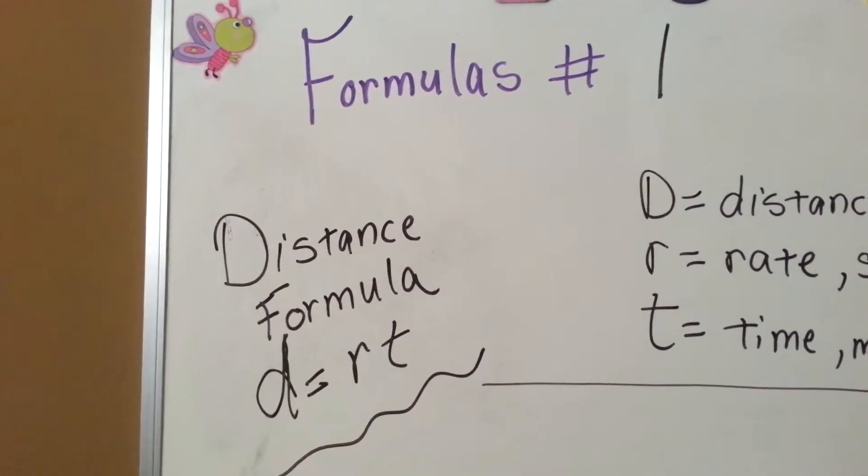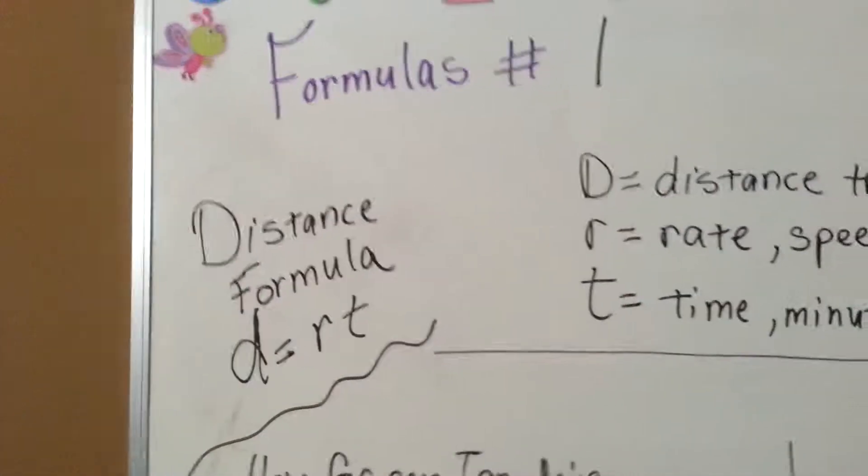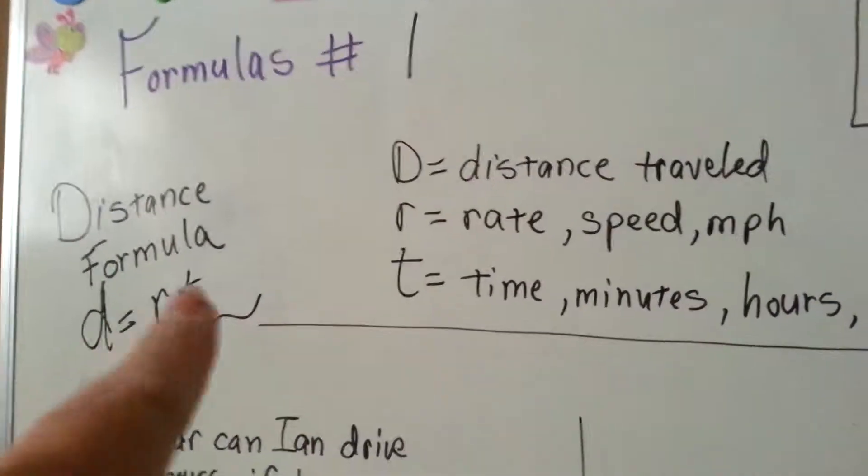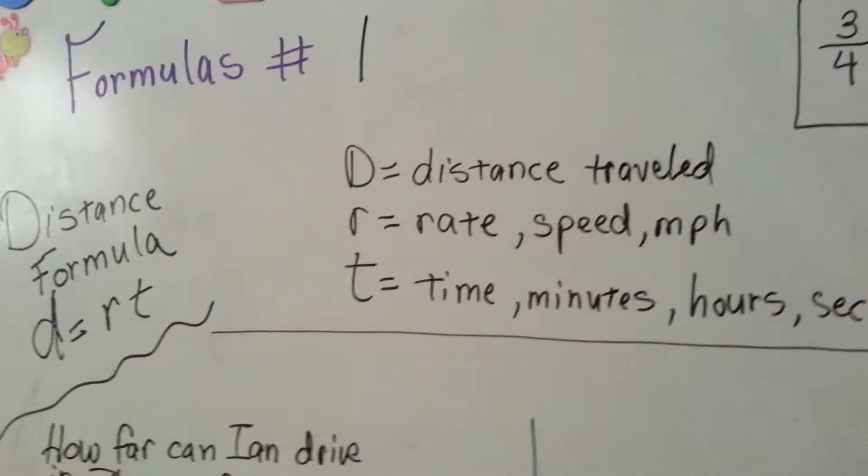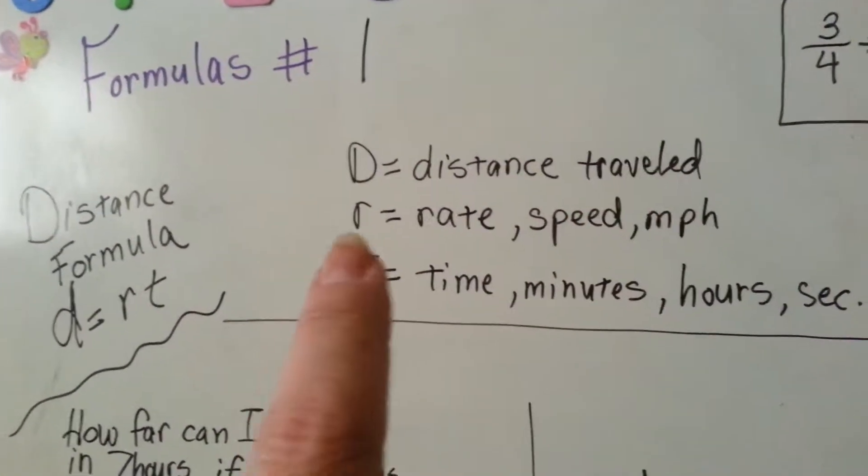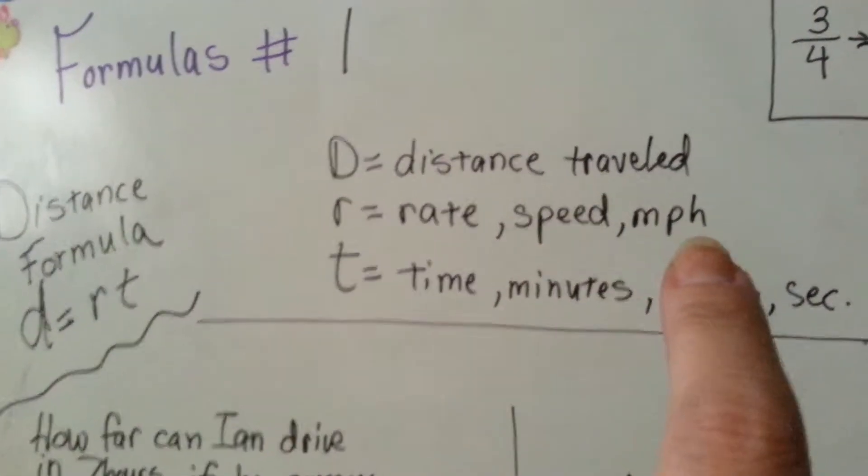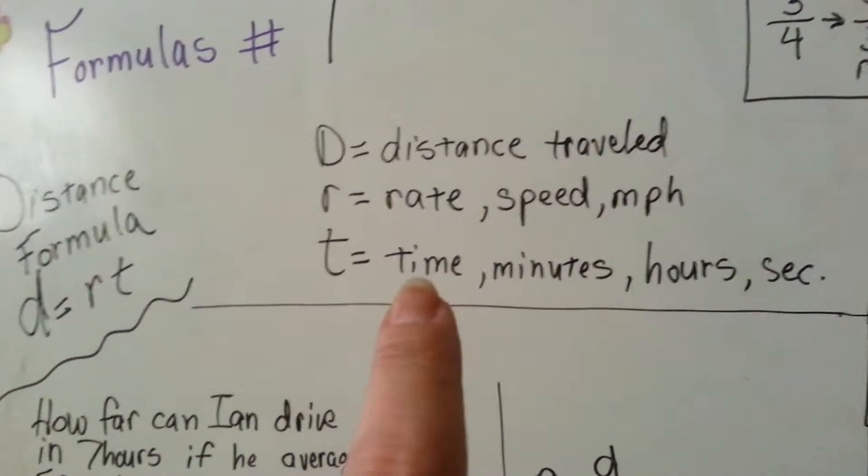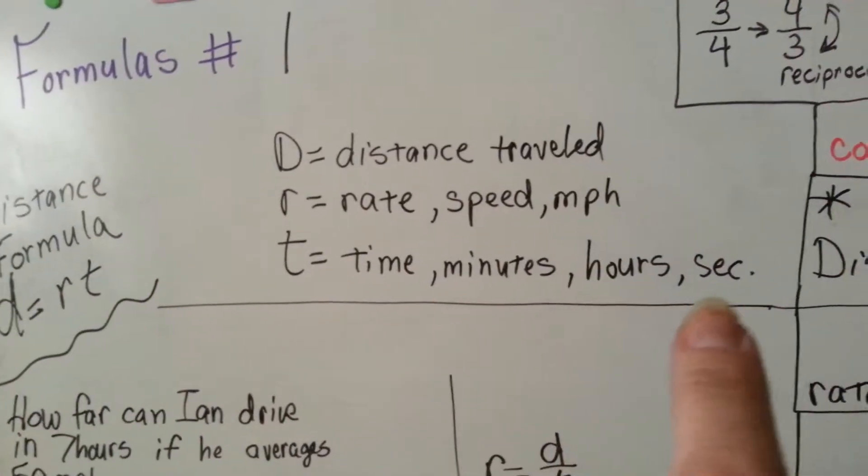Distance Formula D equals RT. Alright, this is a formula that we plug numbers into and we just follow it. In this case, D means the distance that you traveled. R means the rate, speed, miles per hour. And the T means your time in minutes, hours, seconds.